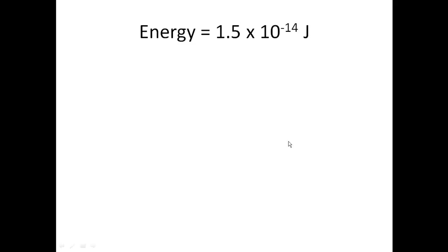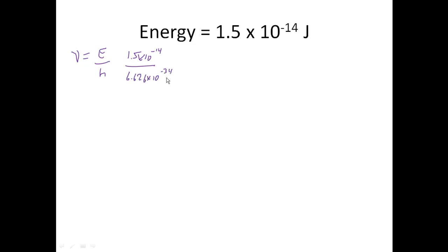How about this one? Energy is 1.5 times 10 to the minus 14th. So I want to be able to calculate frequency. Frequency is going to be energy divided by Planck's constant. Our energy is 1.5 times 10 to the minus 14th, and Planck's constant is 6.626 times 10 to the negative 34th. When I work that out, I get 2.3 times 10 to the 19th, and that is in cycles per second.